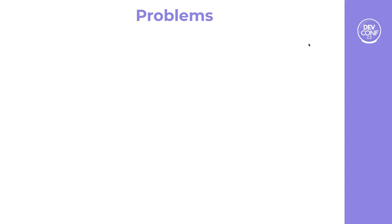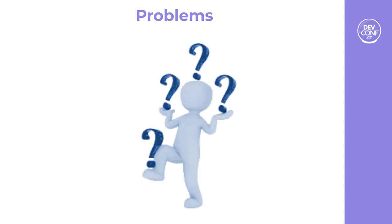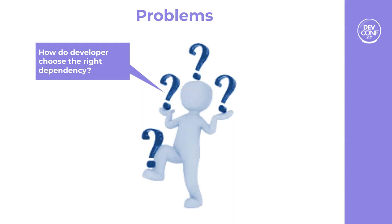Now let's look at the problems developers face when deciding their dependency stack. The first problem is knowing which is the right dependency. There are already thousands of packages available in the market, and every day new packages and new versions are being released. Out of all of them, which one is the right dependency?